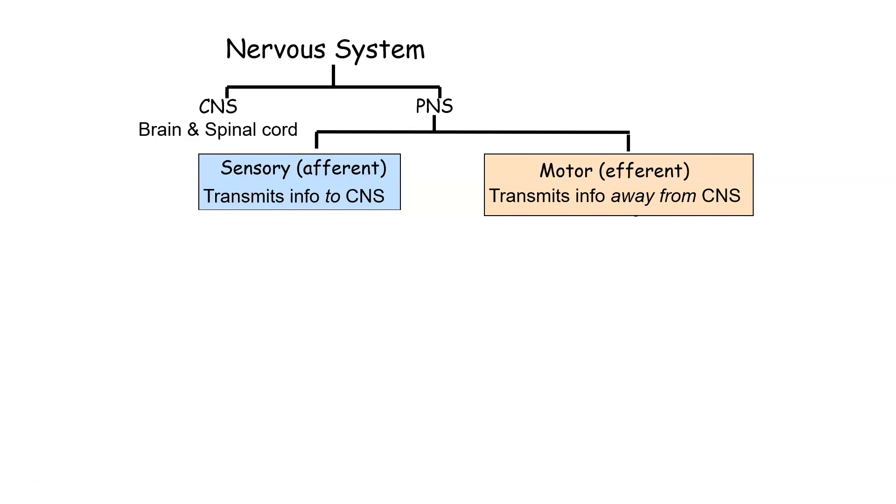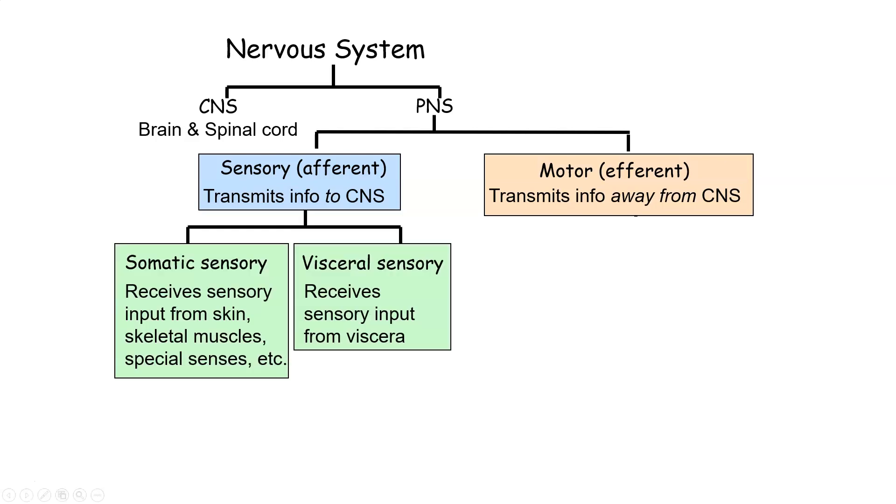In the PNS, we've gone over afferent or sensory transmission. So this includes things like somatic sensory, information that's coming in from the skin, skeletal muscles, special senses. So these special senses include sight, balance, hearing, taste, smell, etc. And we also have visceral sensory information. So we didn't talk too much about this, but this is how we perceive sensory information coming from all our different organs.